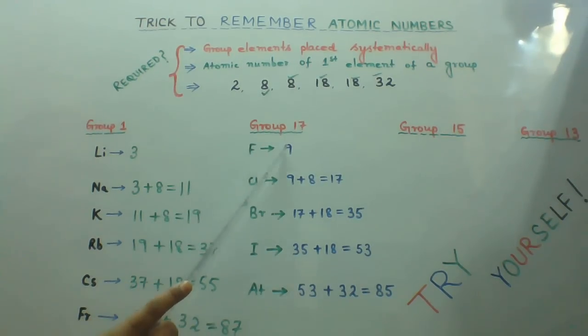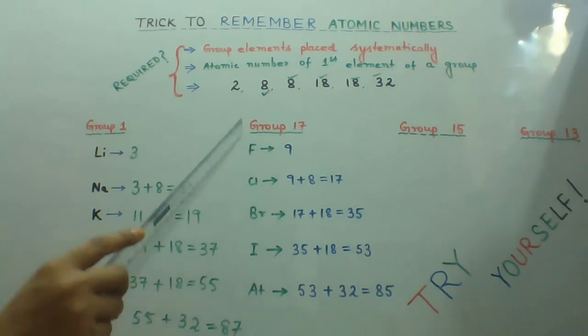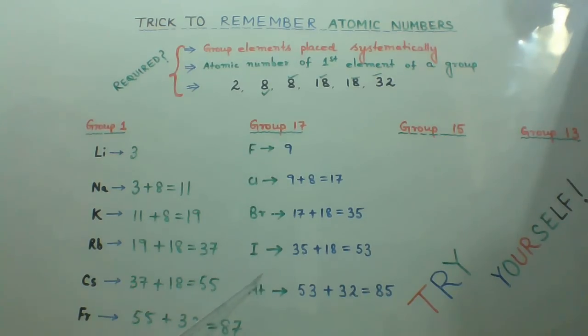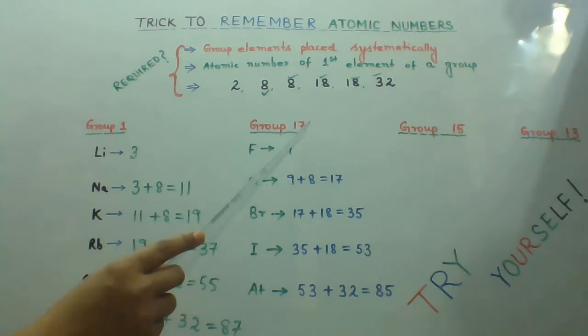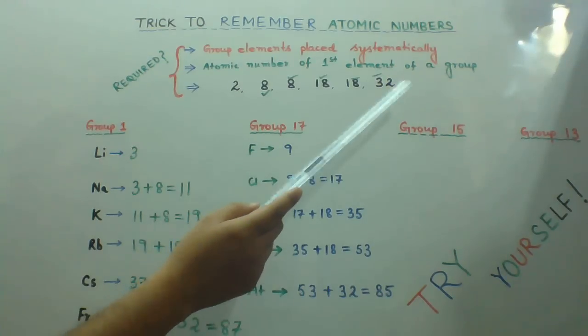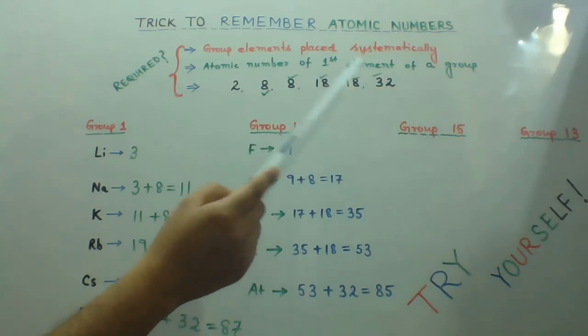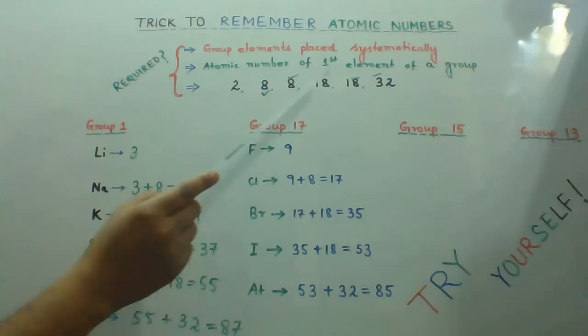Atomic number of fluorine is 9, and we have one, two, three, four, five members in Group 17. So we are going to take four numbers from the opposite end of the series: one, two, three, four.